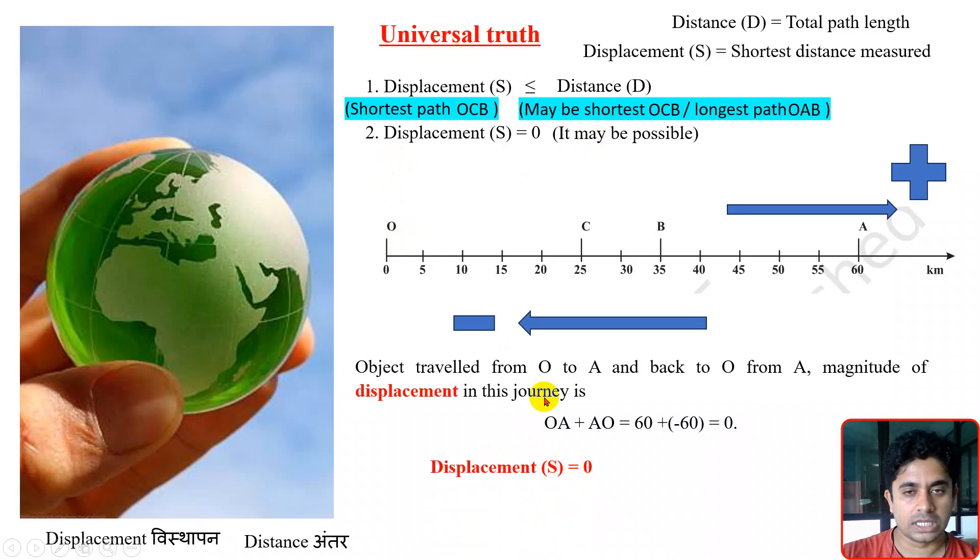But what about the distance? The distance corresponding to this displacement - will it be zero? No. Why? Because for distance, we are not considering the directions. We are only concerned with the path length.